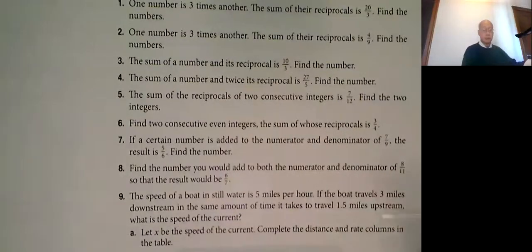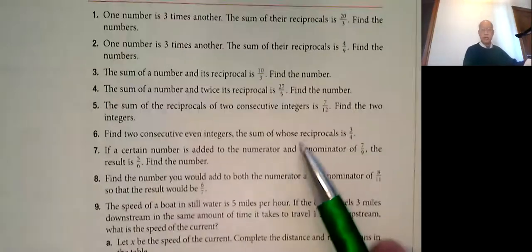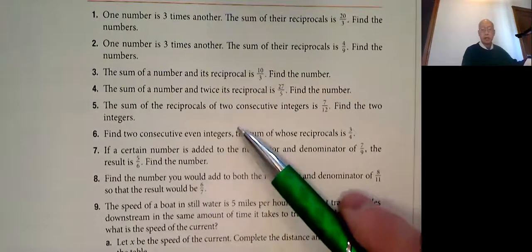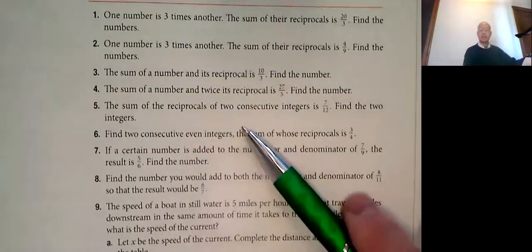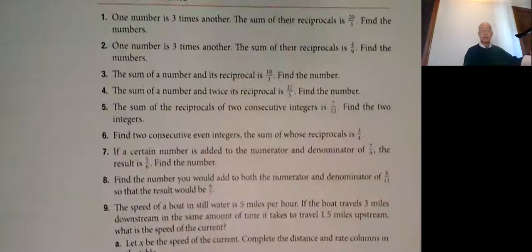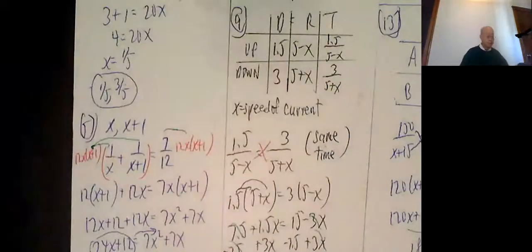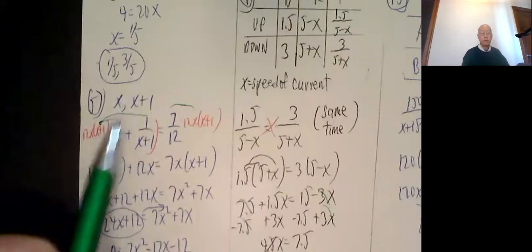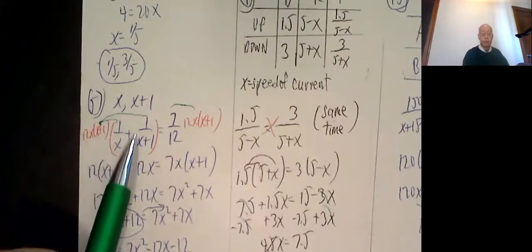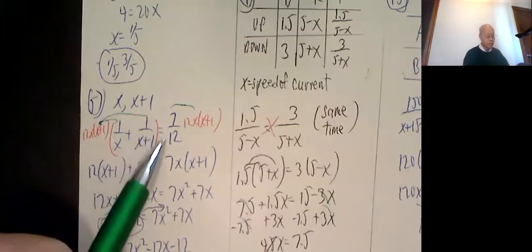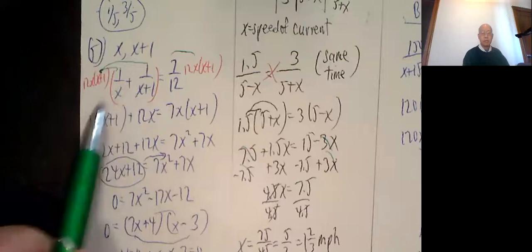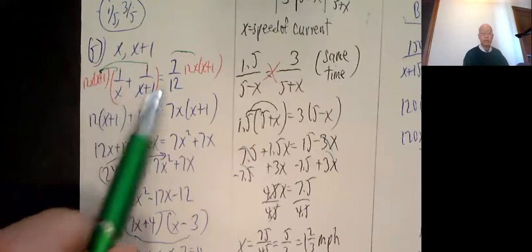Number five: the sum of the reciprocals of two consecutive integers is 7 over 12, finding two integers. You might recall consecutive integers are x and x plus 1, and then we're going to take the reciprocals and add them up. So x and x plus 1, the sum of the reciprocals is 1 over x plus 1 over x plus 1, and that comes out to be 7 over 12.